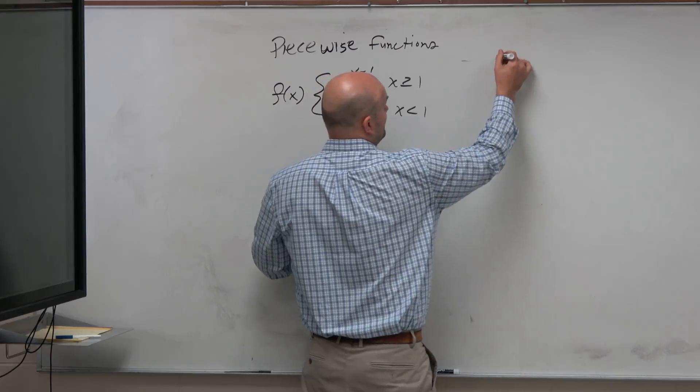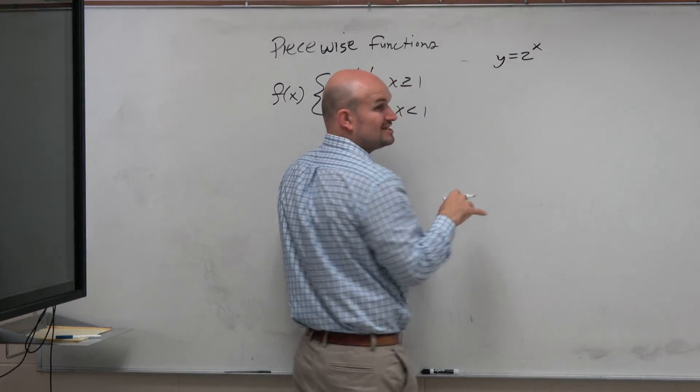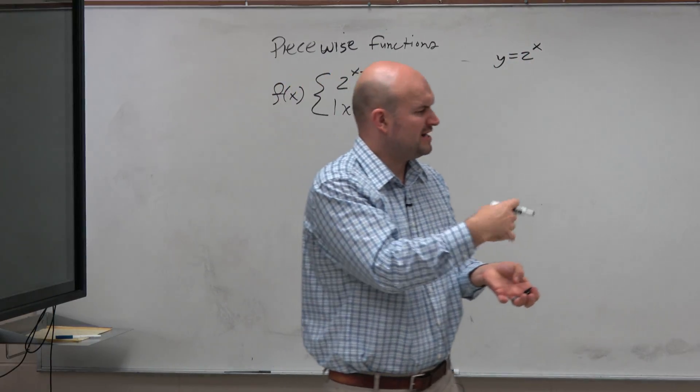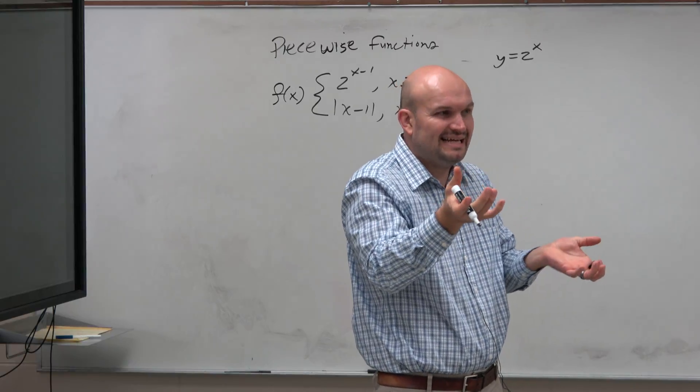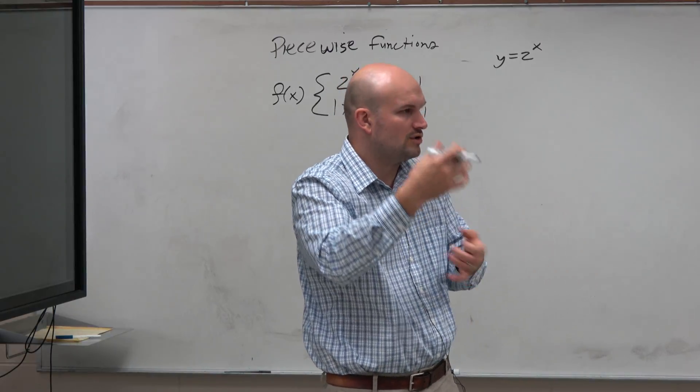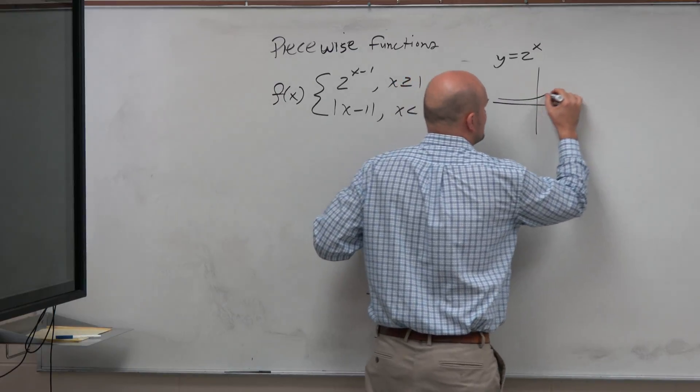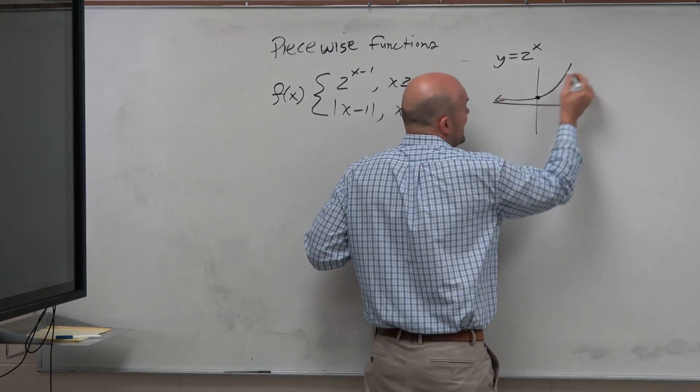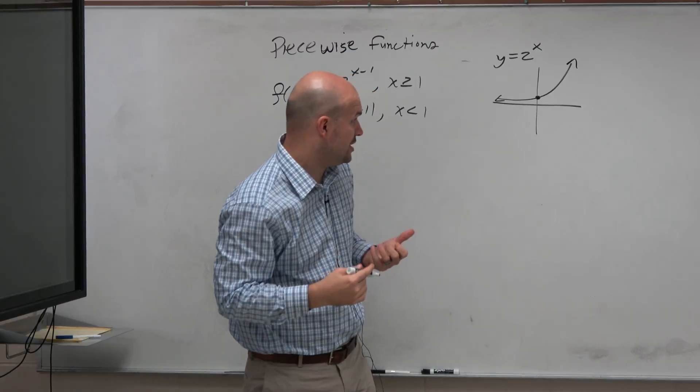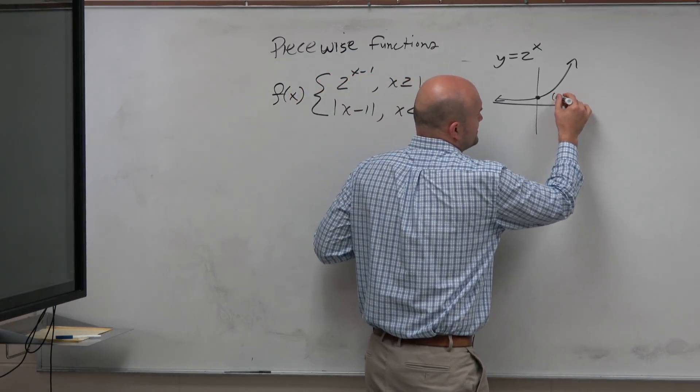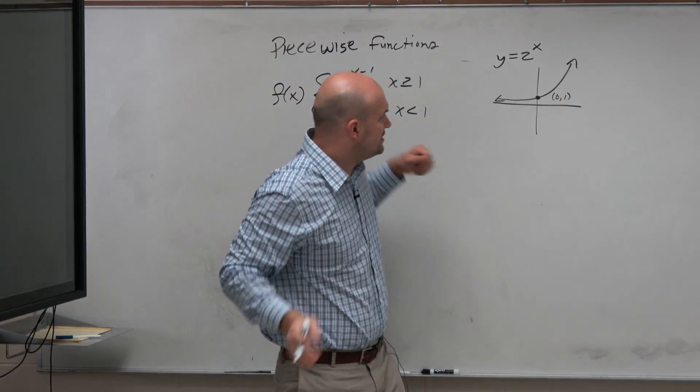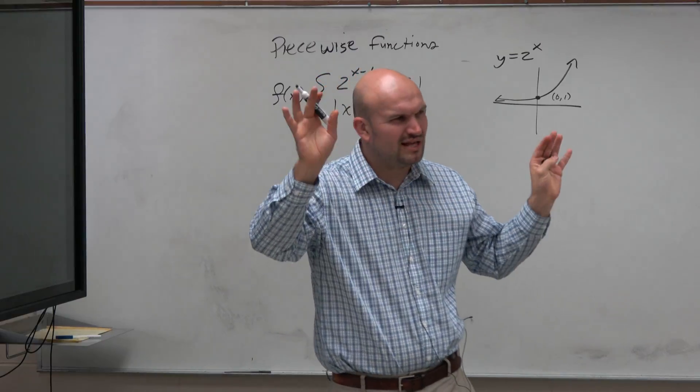So the first one is we have y equals 2 to the x, which is an exponential equation. On your notes, we used e as the base, but it doesn't matter if it's e, 4, 2. The general shape of that graph looks like this, right? And that is from last quiz, so it's something we're already supposed to know. The y-intercept is 0 comma 1. And basically, there's a horizontal asymptote, like the general idea you should have.